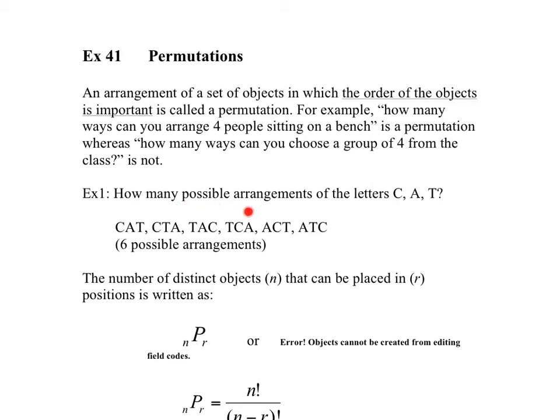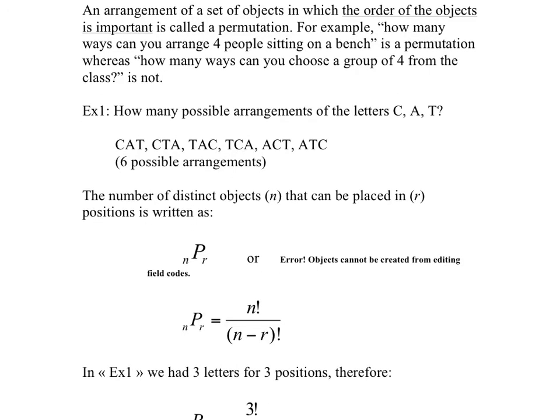How many possible arrangements can we make of the letters C, A, T? There's obviously CAT, but you can also rearrange it as CTA, TAC, and so on, for six possible arrangements. These are called permutations. There are six permutations for the arrangements of the letters CAT.